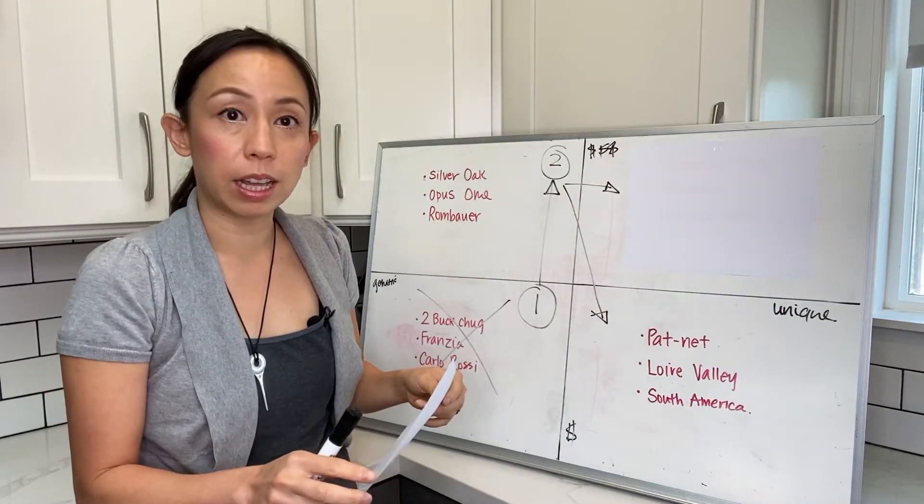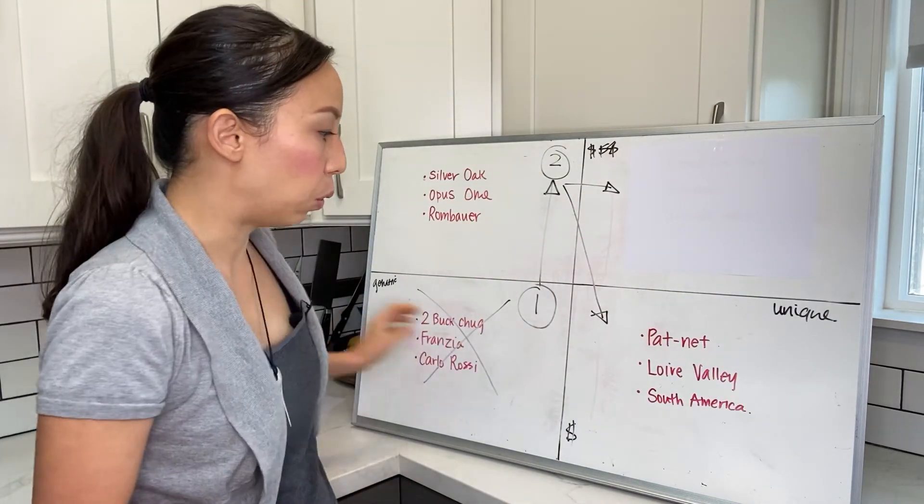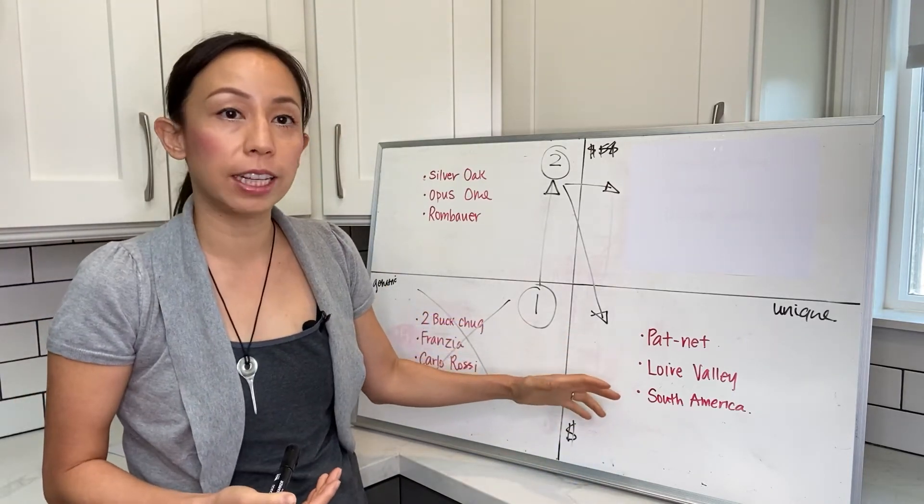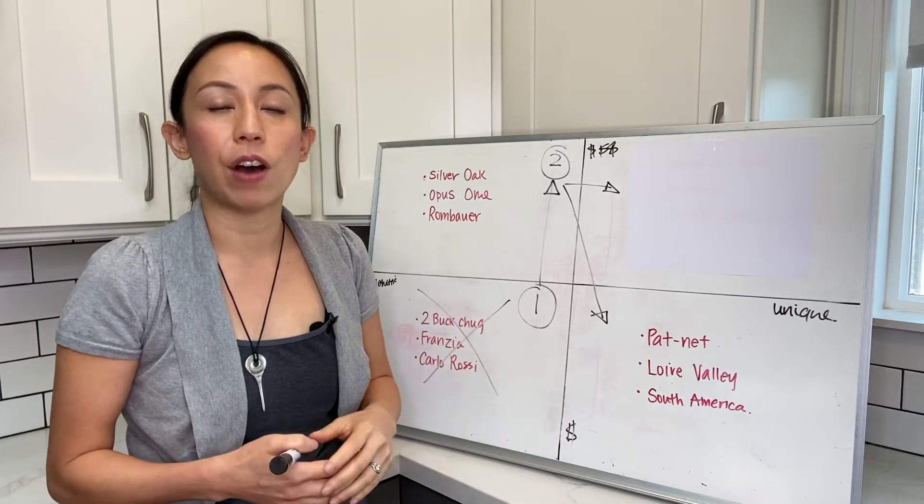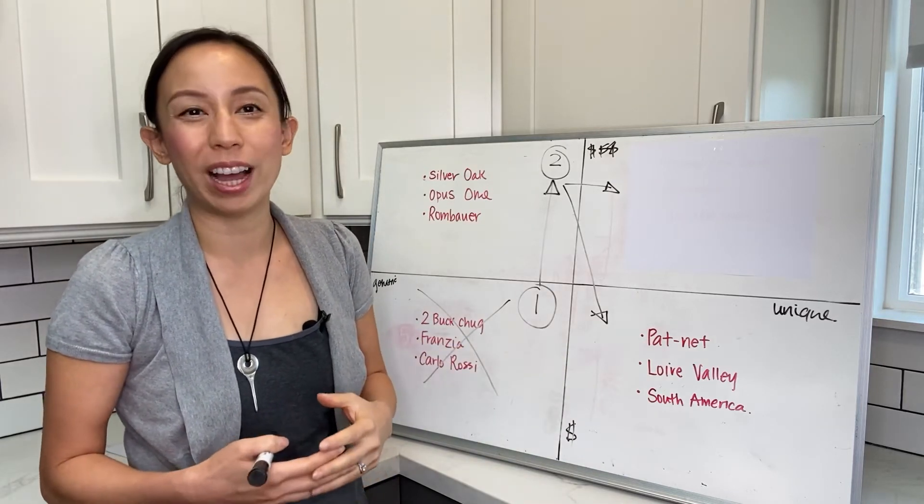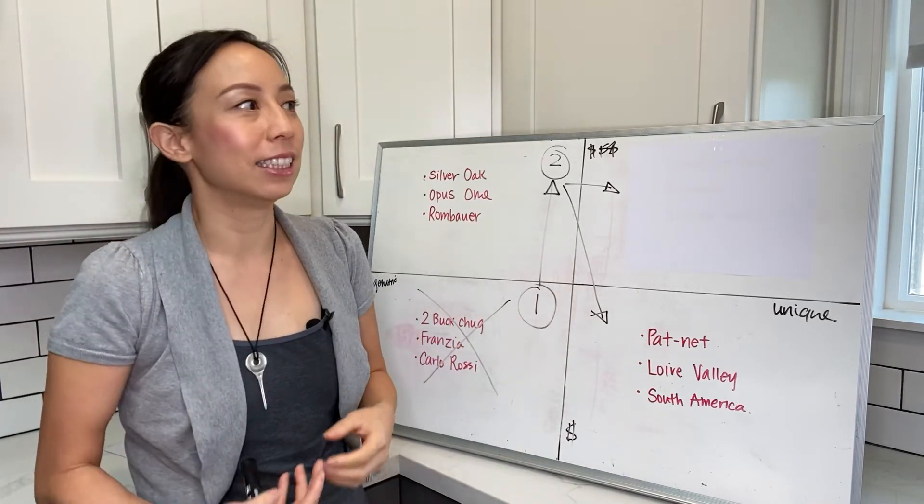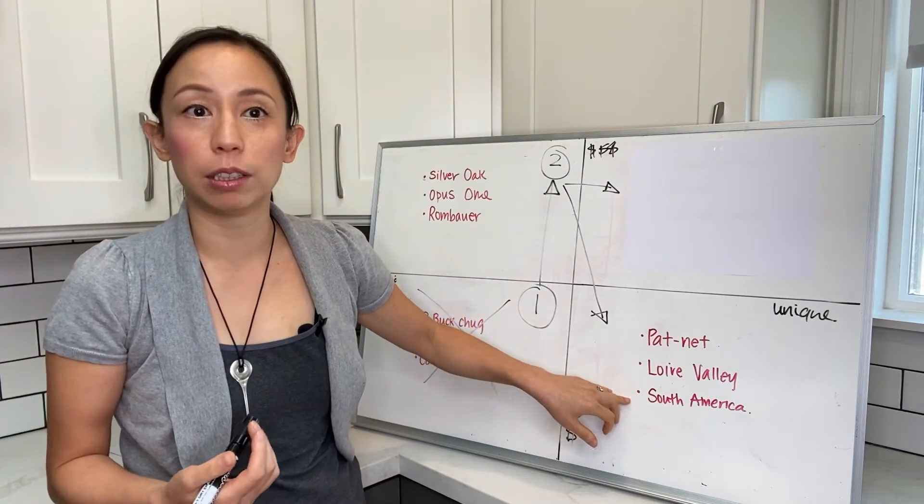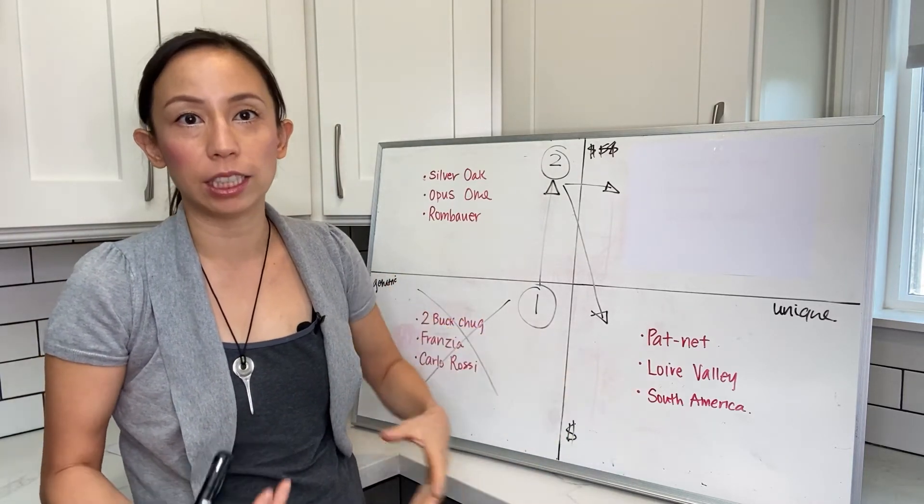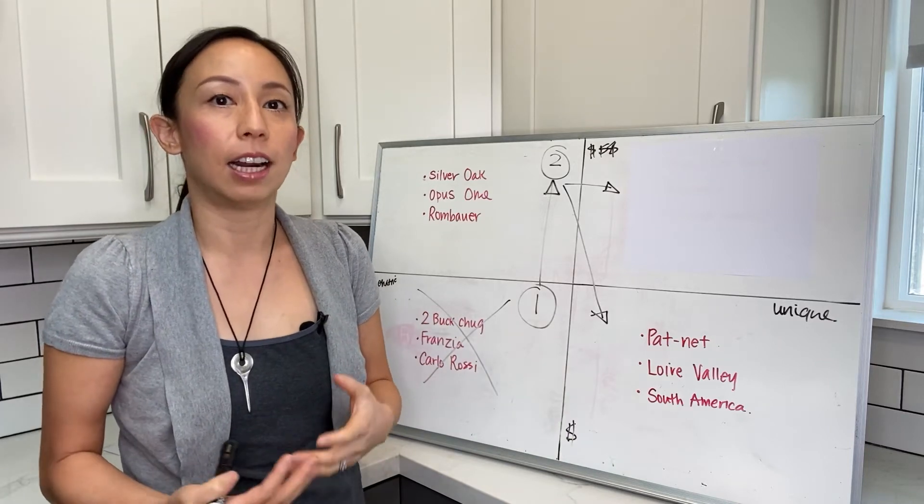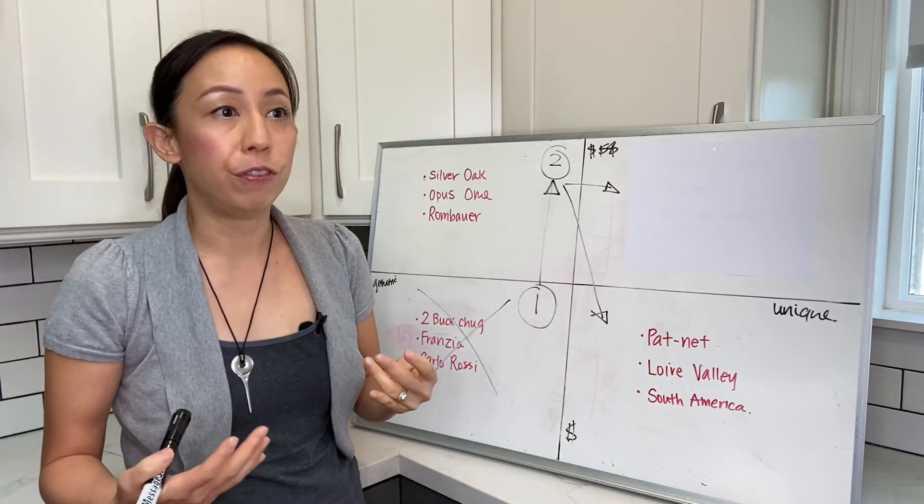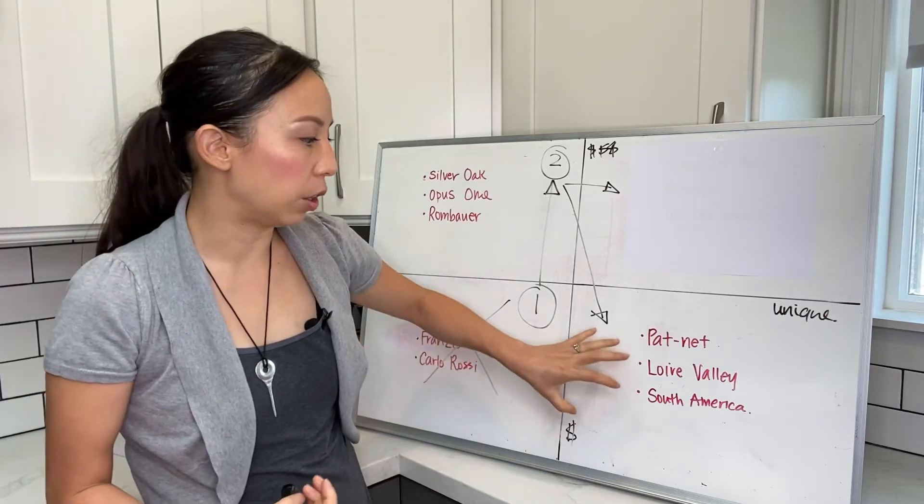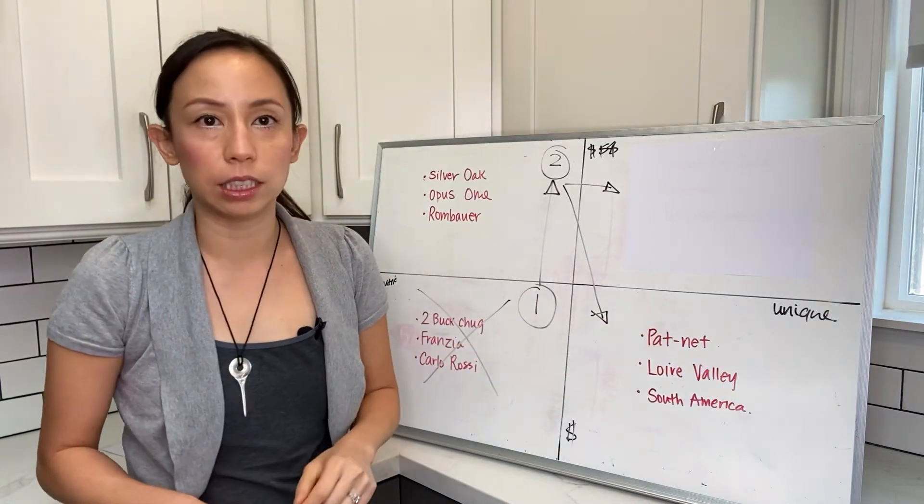This is probably one of the smaller groups of people—what we're calling the unique value or lower price point wines. We're talking about wines like Pétillant Naturel, a lot of wines from Loire Valley, regions that didn't get a lot of high scoring and fame. South America is a really good one that's starting to come up—Chile, Argentina, wines from there that are geeky, very reasonable in price and very unique, but you don't see a humongous market, at least here in the U.S.